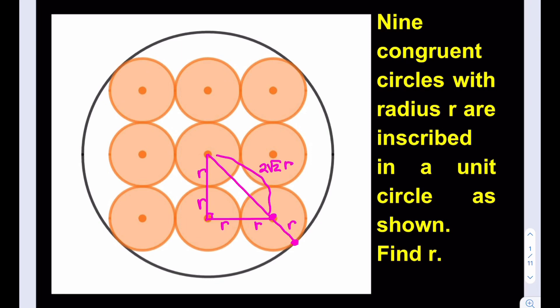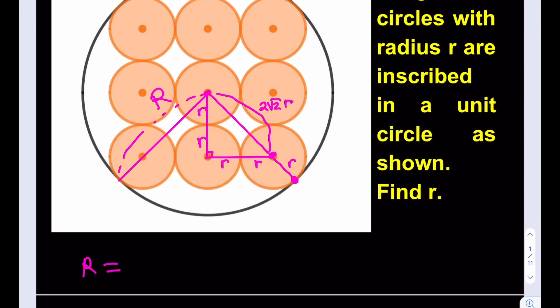This length here is R. The center for the circle in the middle also happens to be the center for the large circle — from symmetry, it has to be that way. So from that center point to the edge of the large circle, the distance is the radius of the unit circle, which is 1. So big R equals 2√2·R plus R, and since the unit circle has radius 1, that equals 1.